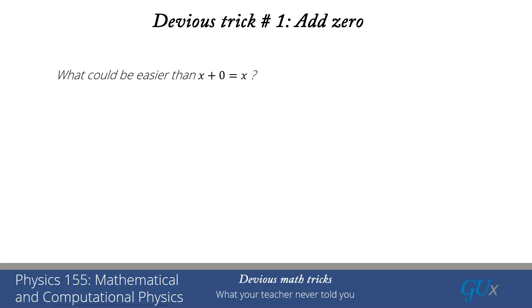Our first one is the add zero trick. What could be easier than x plus zero equals x? Let me show you how you use the trick. It solves many, many different problems. And the challenge is picking out what you're going to use as a zero to add.